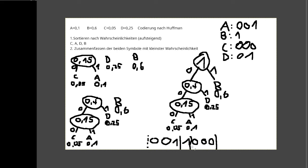Diese Eigenschaft, dass ich eindeutig zuordnen kann, erfordert die Fano-Bedingung: kein Codewort darf der Anfangsteil eines anderen Codewortes sein. Zum Beispiel: wenn B das Codewort 1 hat, darf kein anderes Codewort mit 1 beginnen. Eine Kodierung nach Huffman erfüllt immer die Fano-Bedingung, wenn der Algorithmus korrekt durchgeführt wird.